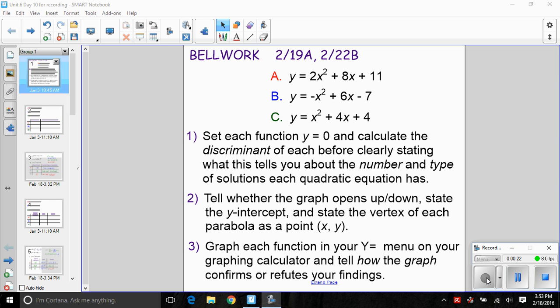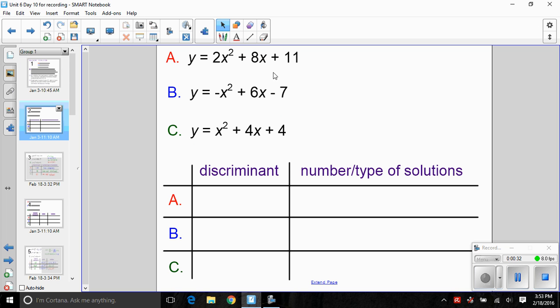First, let's take a look at our bellwork. There's lots that we can tell about the graph of a parabola just from its quadratic equation. Let's take a look at the equations for A, B, and C. Remember the discriminant, that special quantity inside the radical, b squared minus 4ac, tells us about the number and the type of solutions the given quadratic equation has.